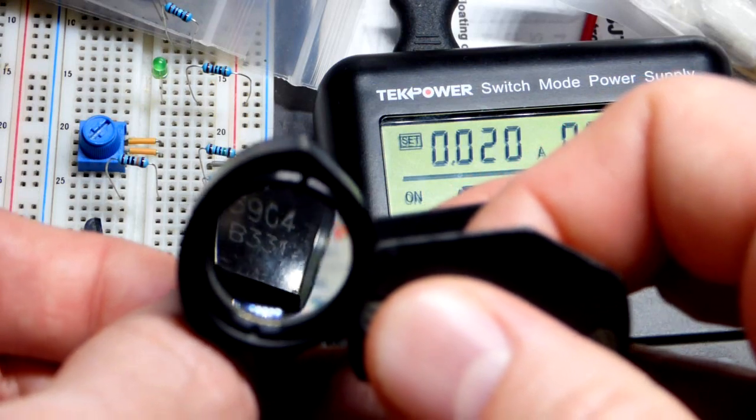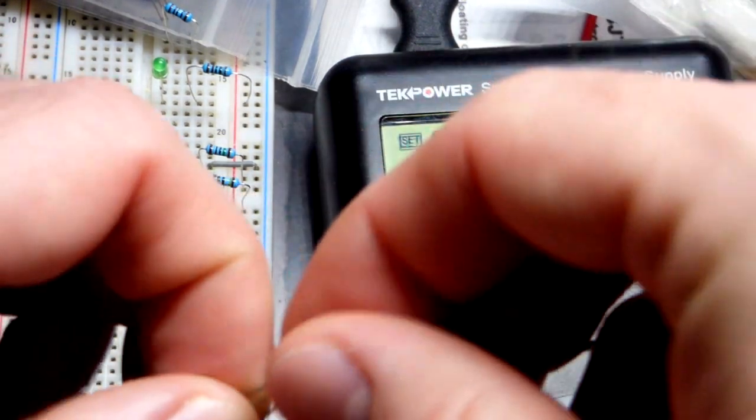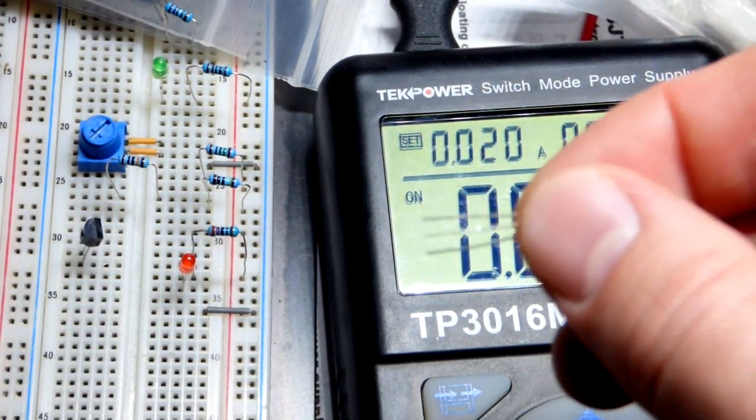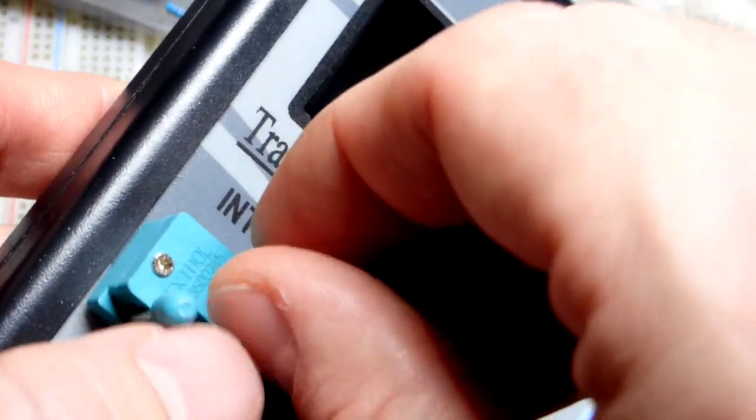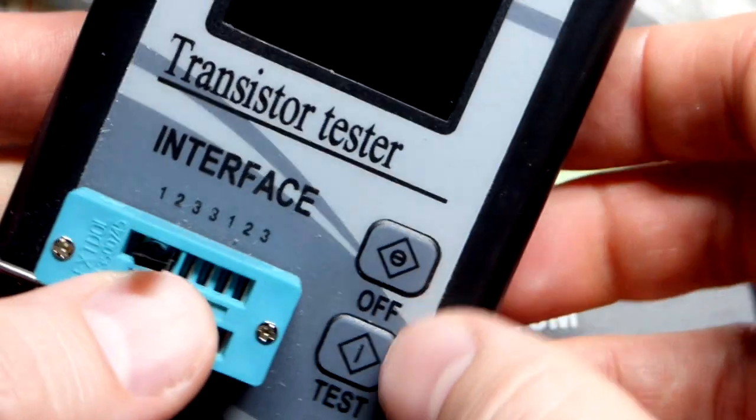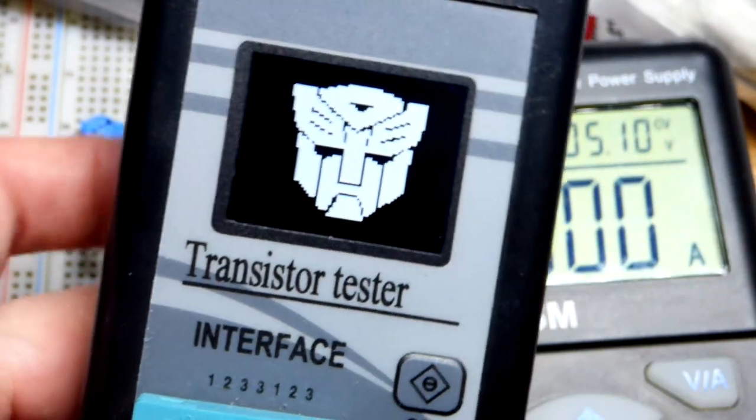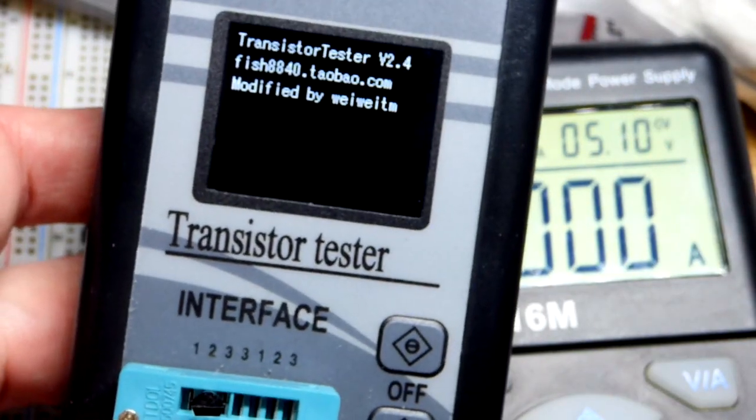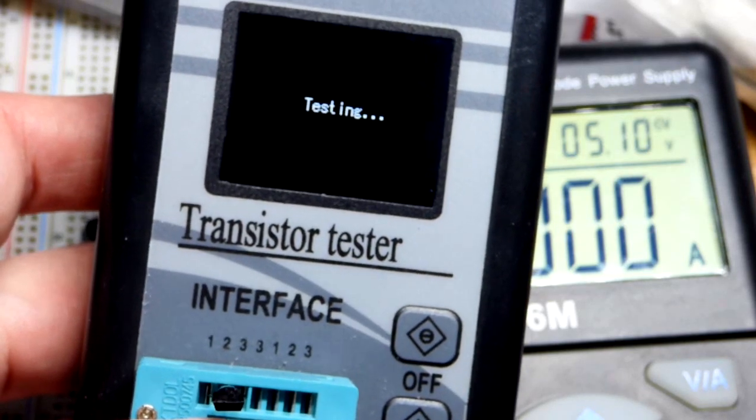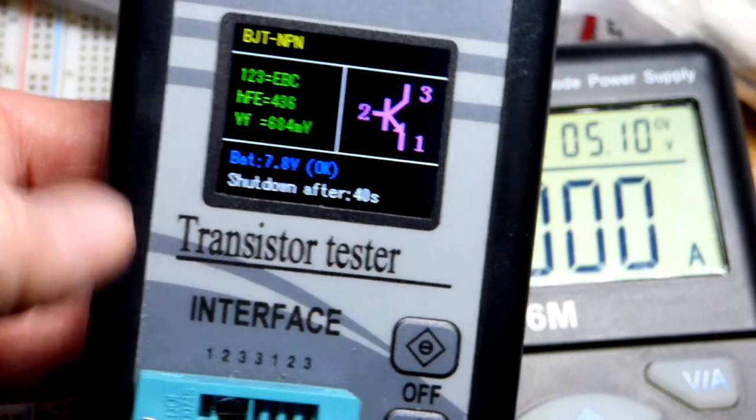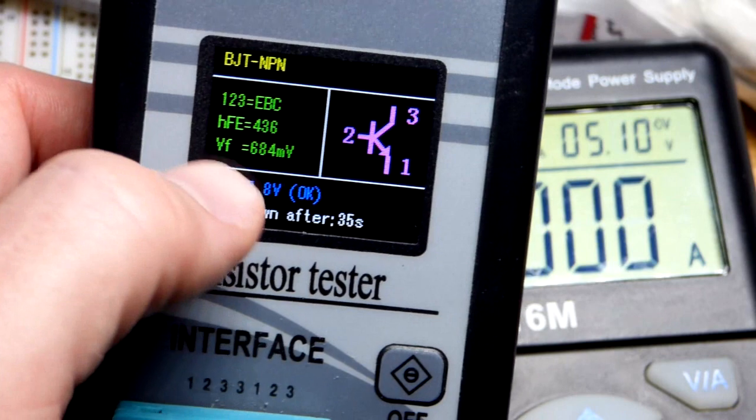We got 2N3904. What this does is it takes a small base current and based on the base to emitter current, it lets a lot more current go from collector to emitter. It is a current controlled amplifier. We're just going to make kind of a switch today. The basic property is pin 1-2-3: emitter, base, collector.